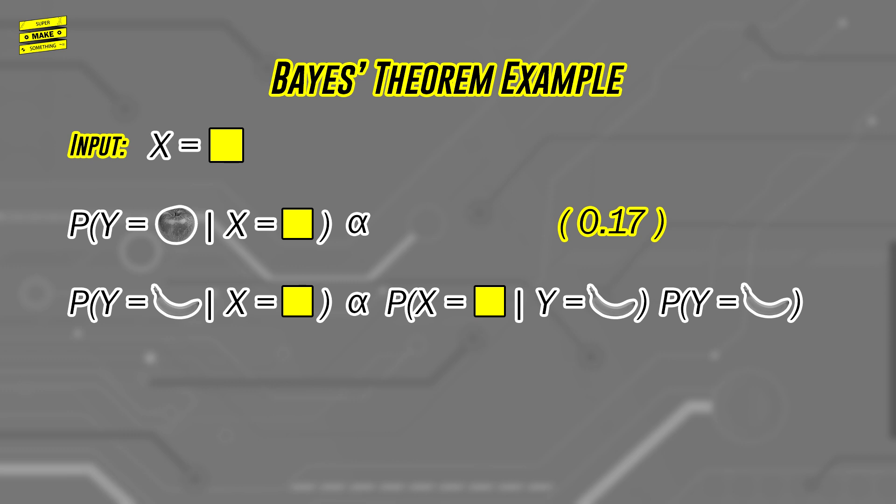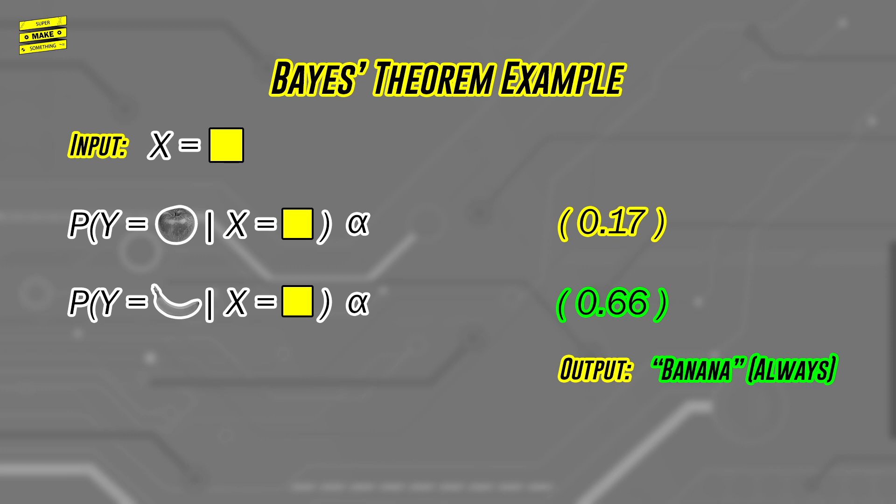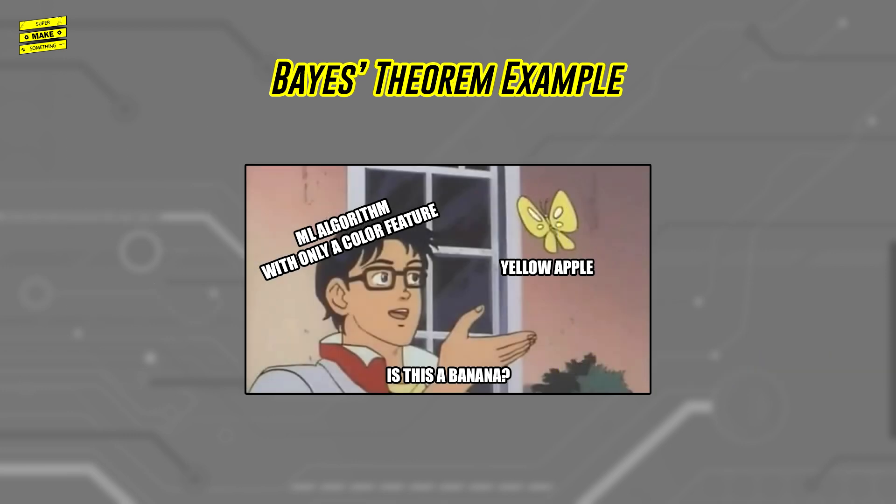Unfortunately, repeating the same math for a banana gives 0.66, meaning that the robot will always classify something yellow as being a banana, and that it will never sort yellow apples correctly.